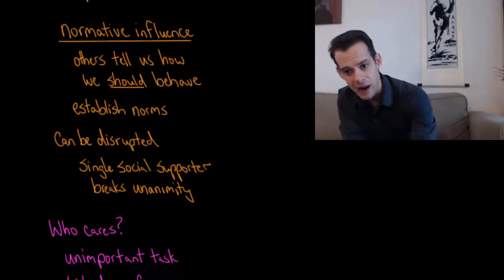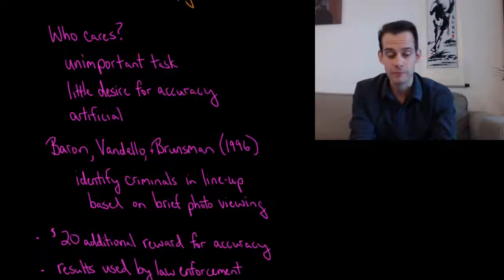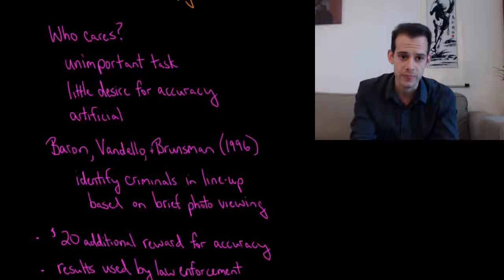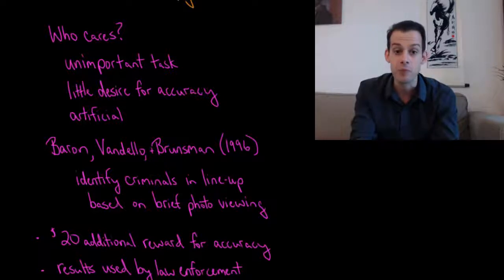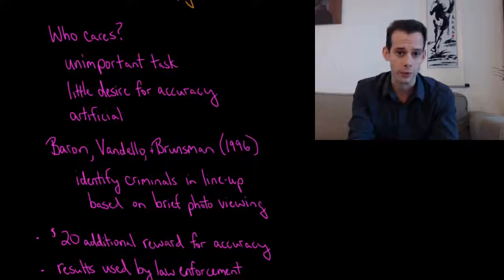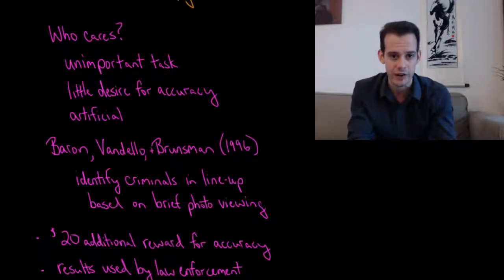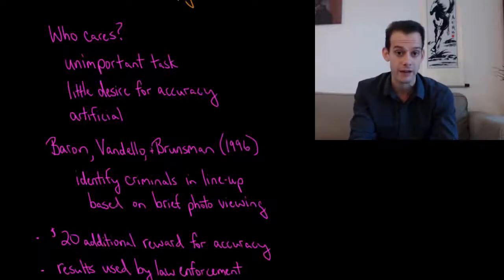Now, when we think about the Asch paradigm for investigating conformity, which has been done in many countries around the world over the course of many decades, we might ask, who cares? Even if we can see that people conform with the group, what difference does it make? It's not an important task. I mean, it doesn't really matter which line you say. If you say 2 or 3, there's really no effects. And there's very little desire for being accurate. You don't get anything for giving the correct response. So why wouldn't you just go along with the group? I mean, it doesn't matter if you give the wrong answer. And it's an artificial situation. I mean, this is something you will never do in your real life. And these are valid criticisms of this approach to investigating conformity.